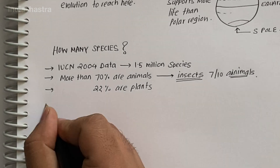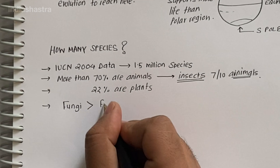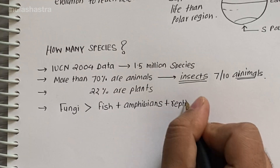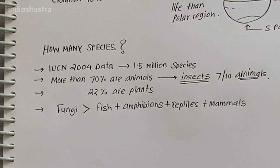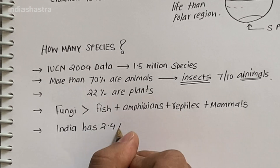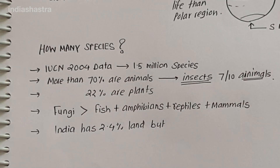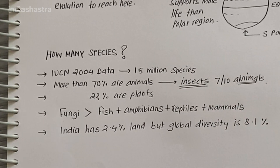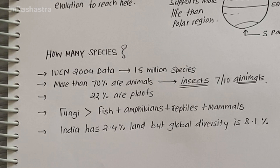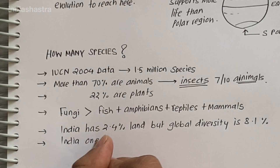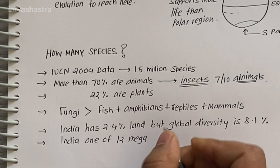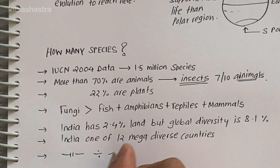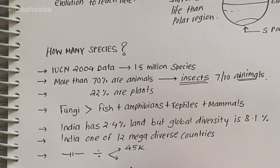The number of fungi species in the world is more than the combined total of the species of fishes, amphibians, reptiles, and mammals. India has only 2.4% of the land area of the world, but its share of the global species diversity is an impressive 8.1%. That is what makes our country one of the 12 megadiversity countries of the world. Nearly 45,000 species of plants and twice as many animals have been recorded from India.